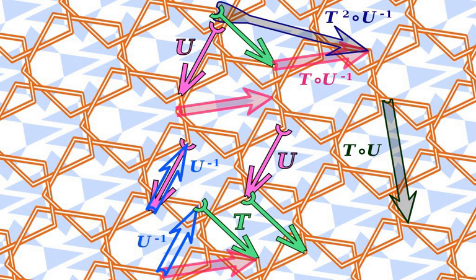Dual to the notion of invariants are coinvariants, also known as orbits, which formalizes the notion of congruence: objects which can be taken to each other by a group action.